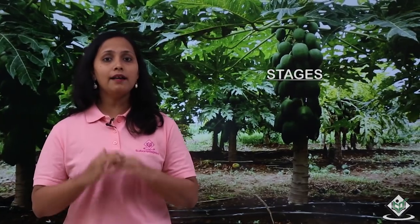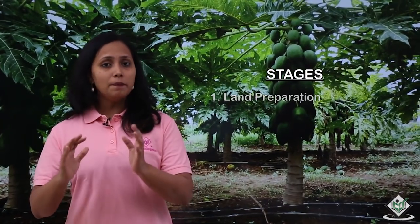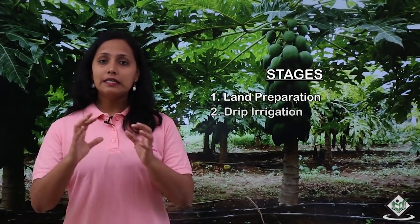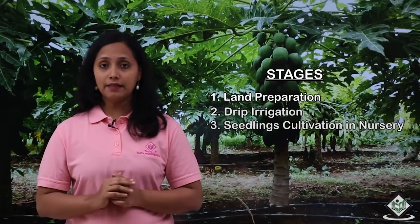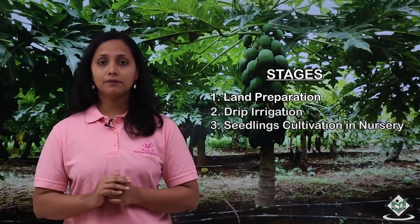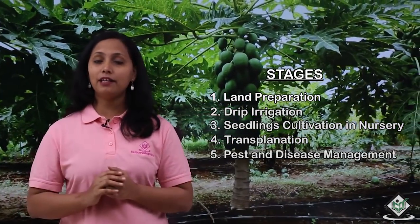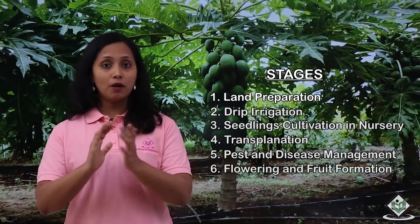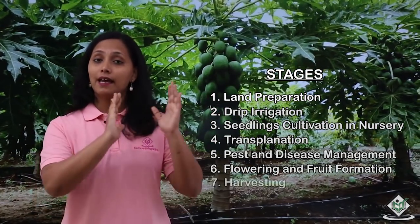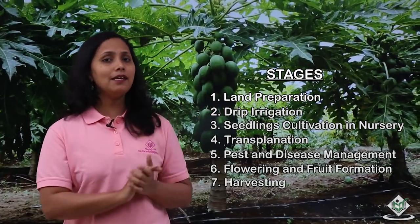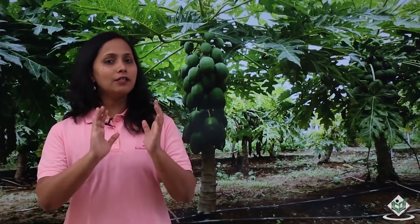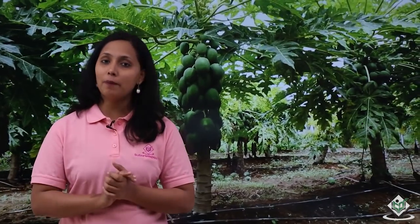Let us now see the stages involved in the cultivation of papaya fruit crop. The stages are: land preparation, drip irrigation, seedlings cultivation in nursery, transplantation, pest and disease management, flowering and fruit formation, and harvesting.